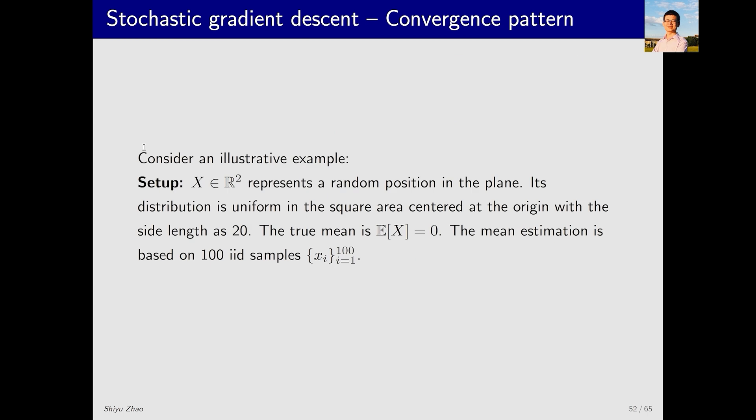Let's look at an example. We define a point's position on a two-dimensional plane, denoted by x, which distributes uniformly within a square region with a side length of 20, centered at the origin. We randomly sample 100 points in this region.